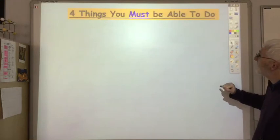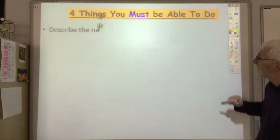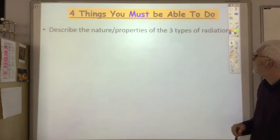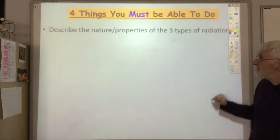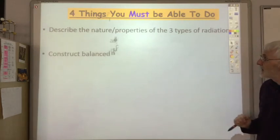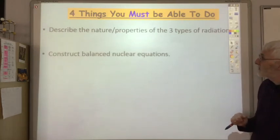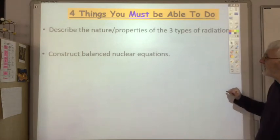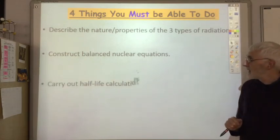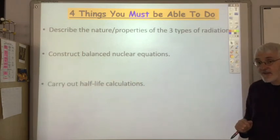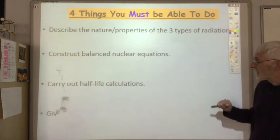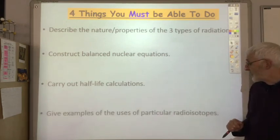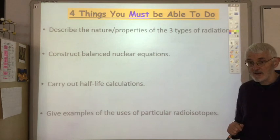Finally, four things you must be able to do: describe the nature and properties of the three types of radiation; construct balanced nuclear equations for alpha and beta decay; carry out half-life calculations; and give examples of the uses of particular radioisotopes.